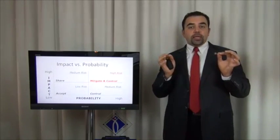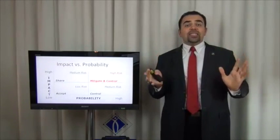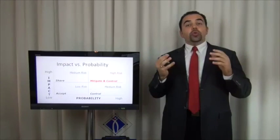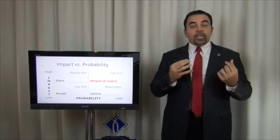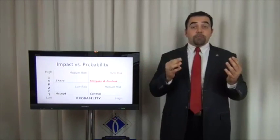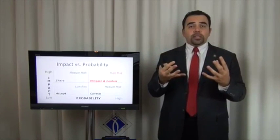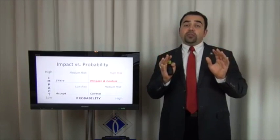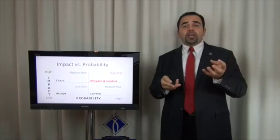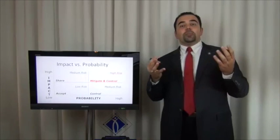To respond to risk, you analyze probability and impact. For high impact and high probability risks, you can either avoid the risk entirely or mitigate and control it to reduce it. For medium risk — high probability and low impact — you control it and try to reduce it. For high impact and low probability risks, like fire, you transfer it by buying an insurance policy. If both impact and probability are low, you assume the risk. For example, a ten-dollar cashier fraud in a supermarket is not worth implementing extensive controls for.